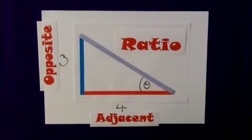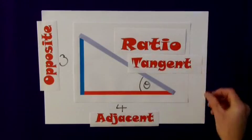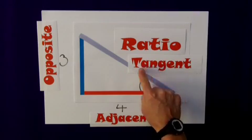Now, this particular ratio is given a funny name. It's called tangent, often abbreviated to tan. You'll see that on your calculators. Tangent.